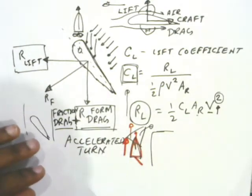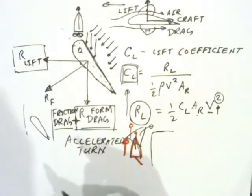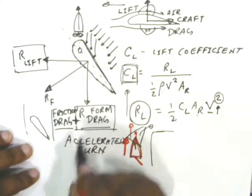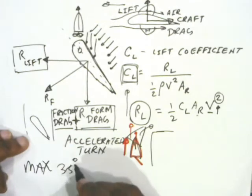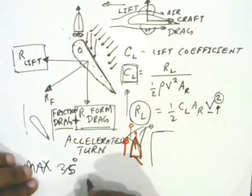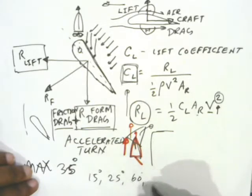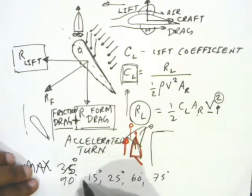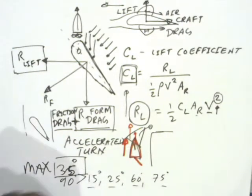Now let's look at this question: why is the maximum rudder angle in most merchant ships about 35 degrees? Why not 45, 60, or other angles less than 90 degrees — say 15, 25, 60, or 75 degrees? All these are less than 90 degrees, but why is 35 degrees the significant value? We'll look at the reason for that.